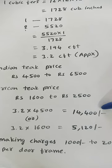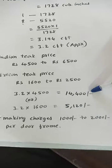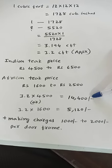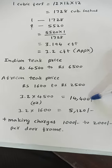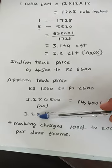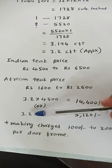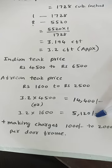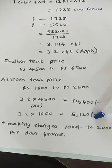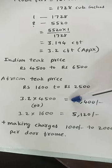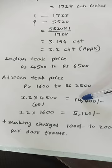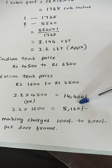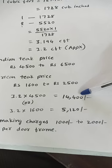To this wood price, we add the making charges. A carpenter will charge anywhere between 1,000 to 2,000 rupees depending on the design you want. For African teak: 3.2 CFT × 1,600 = 5,120 rupees for one wooden door frame. Prices may vary from place to place and quality to quality. Making charges of 1,000 to 2,000 rupees are additional — this calculation covers only the cost of the wood.